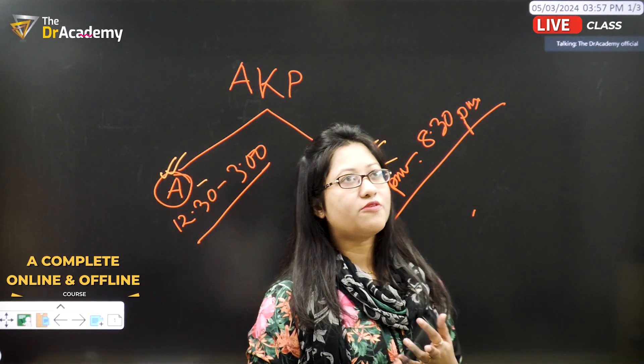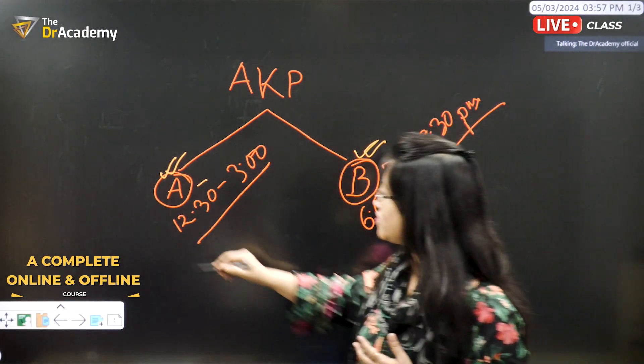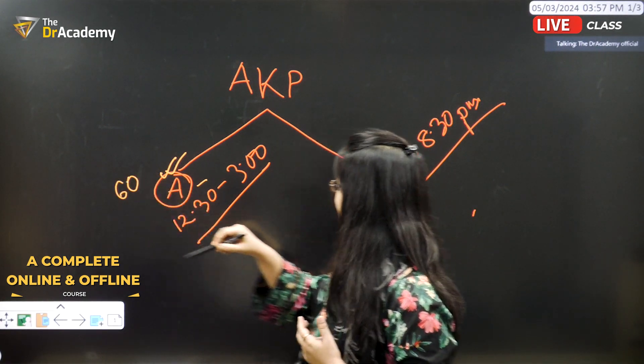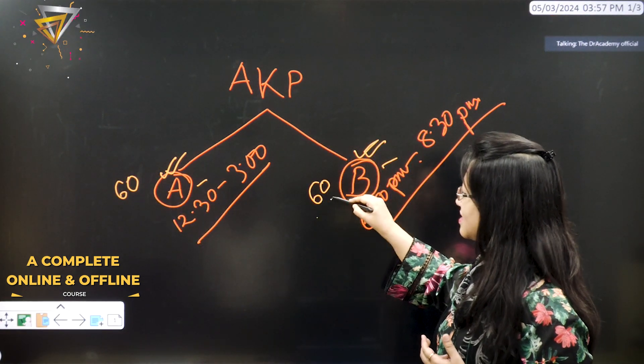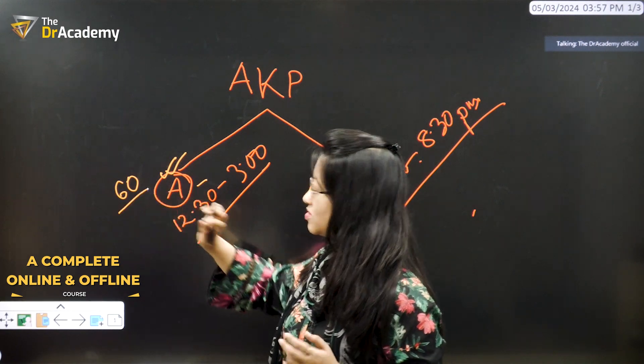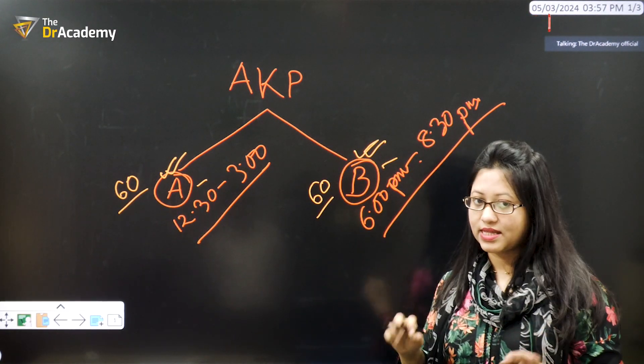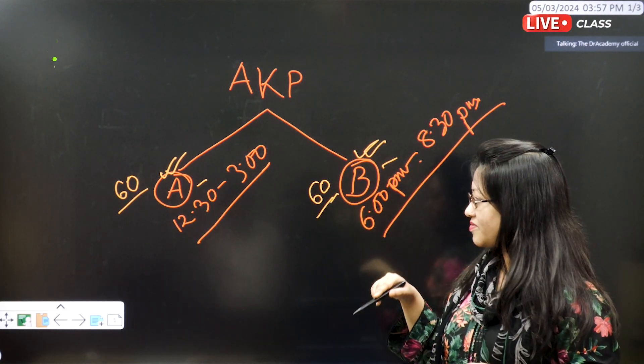In our days, around 55 to 60, you can assume in Part A there will be 60 questions. In Part B, there will be 60 questions. It was not fixed then. Around 60 questions.